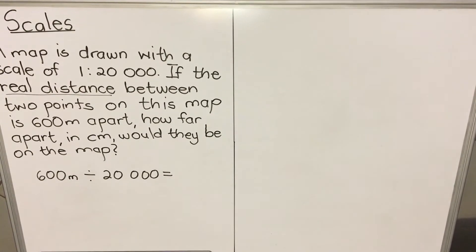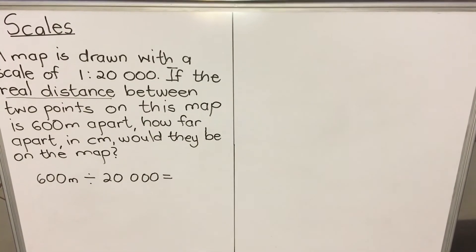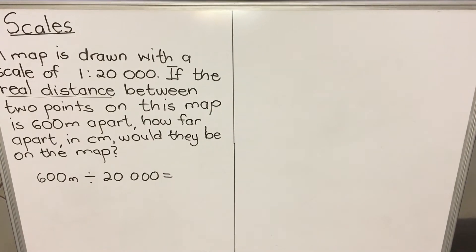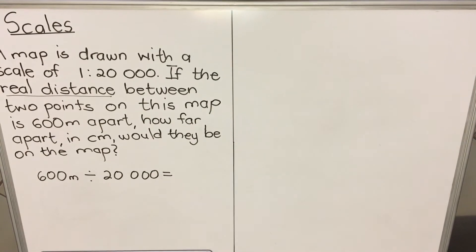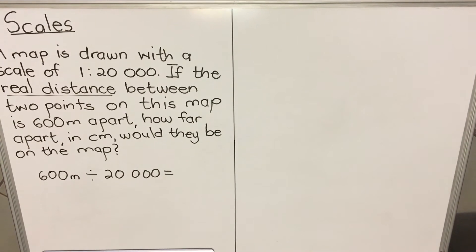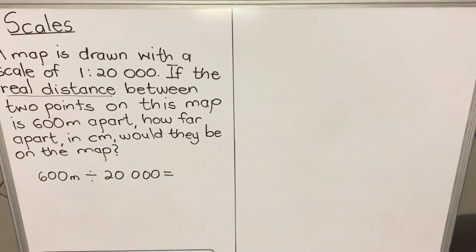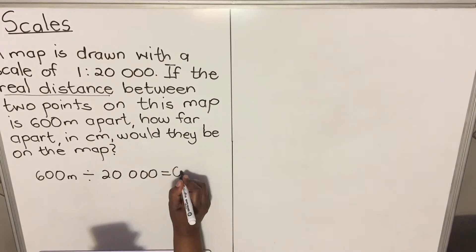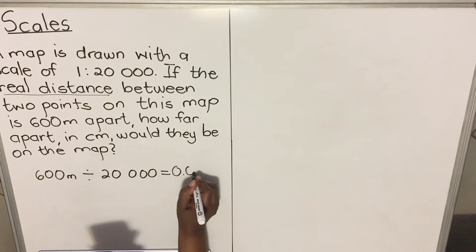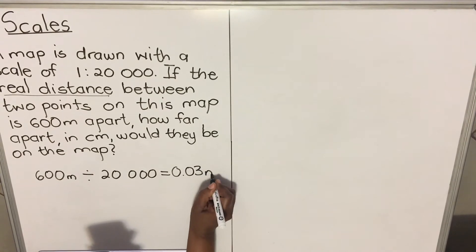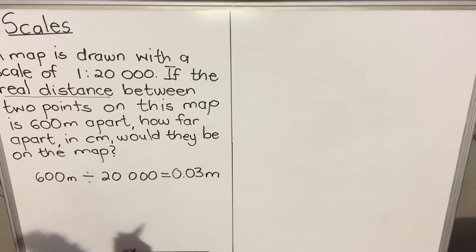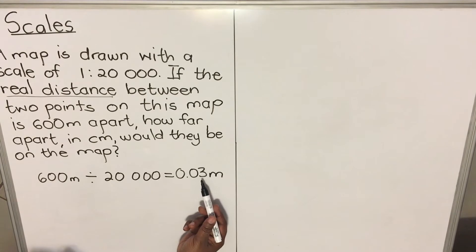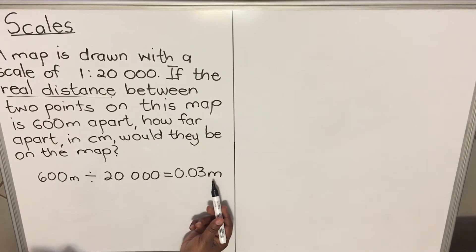Let's divide and see using our calculator: 600 divided by 20,000. We get 0.03, and the units are meters — so on the map it will be 0.03 meters.